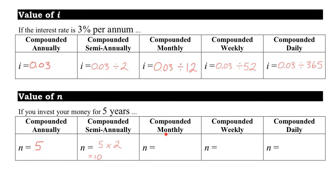For monthly compounding, interest is calculated 12 times per year, so for 5 years: 5 × 12 = 60. N is 60. For weekly compounding, multiply the number of years by 52. For daily compounding, multiply by 365. You have to make adjustments to both I and N depending on how often the interest is being compounded.